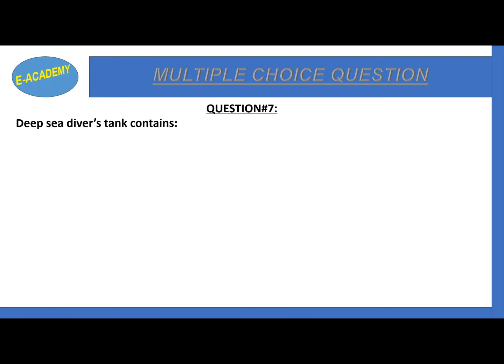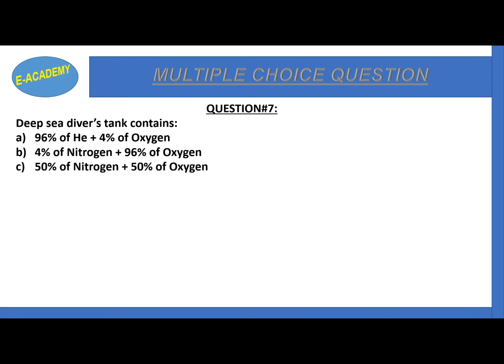Question number 7: what does a deep sea diver's tank contain? Option A is 96% helium plus 4% oxygen. Option B is 4% nitrogen plus 96% oxygen. Option C is 50% nitrogen plus 50% oxygen. The correct option is A - 96% helium plus 4% oxygen.